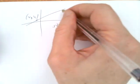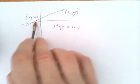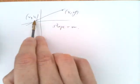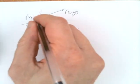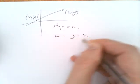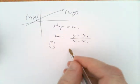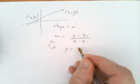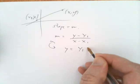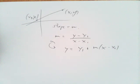we'd say that every point of the line x,y has to be a point for which the slope coming from this point x1,y1 has to be m. So m has to be y minus y1 over x minus x1. If you do a little algebra and solve that, you get y equals y1 plus m times x minus x1.